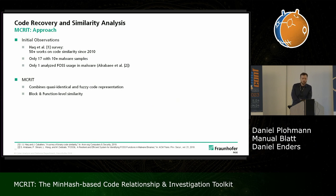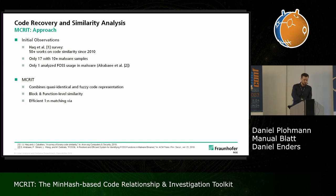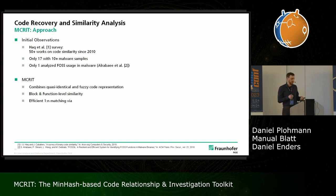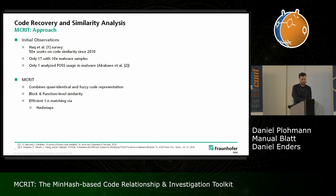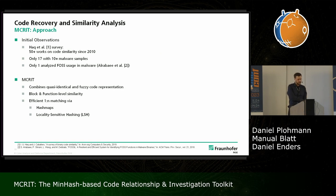We are aiming for both the basic block and the function level with this, at least for the quasi-identical approach. Overall, we want to do efficient one-to-many matching - you have one sample you're interested in, you submit it to the service, and you get a response on where it has similarity across everything that's been indexed. The techniques used are hash maps, because they are very efficient with access, and locality-sensitive hashing - in particular, MinHash - in order to speed up the fuzzy part as well.